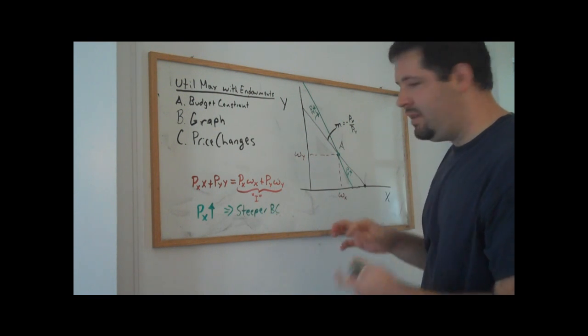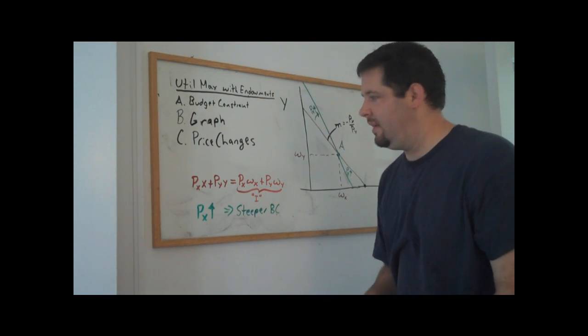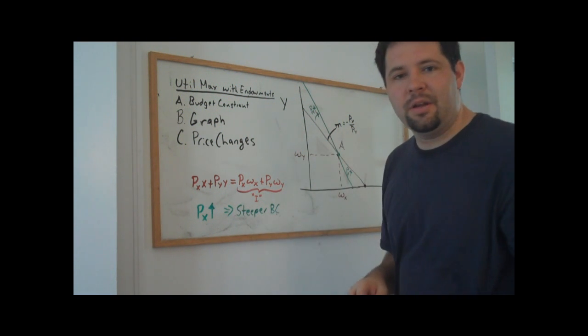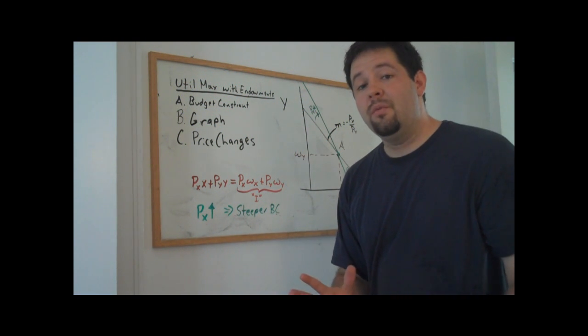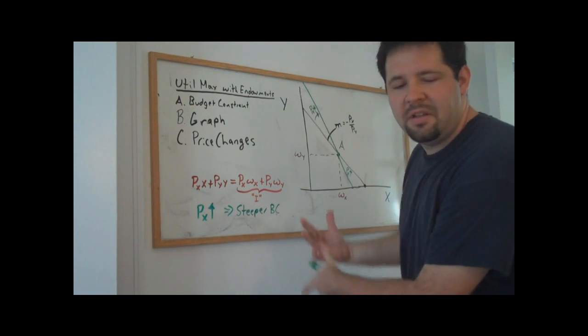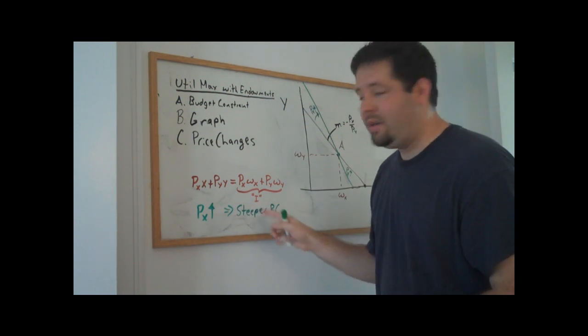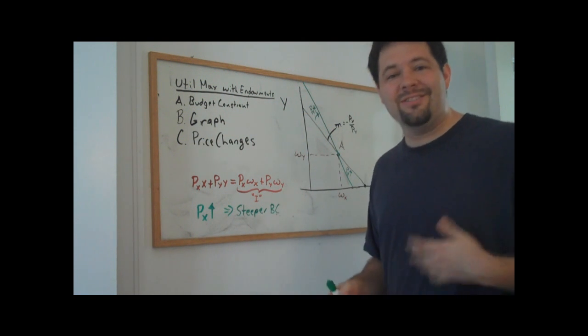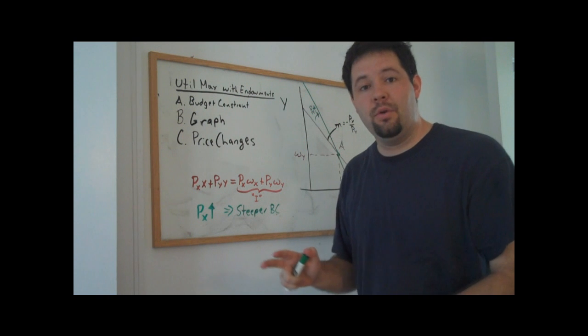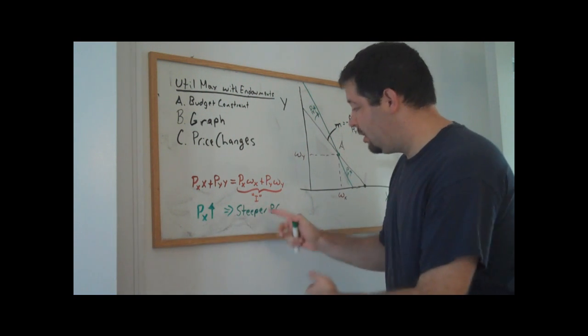This is sort of a more general way of thinking about budget constraints in an endowment economy. It turns out that when we want to describe general equilibrium, we'll need to have these tools in our back pocket. We didn't say that income was determined outside of our model. And we're allowing the prices to themselves determine income.